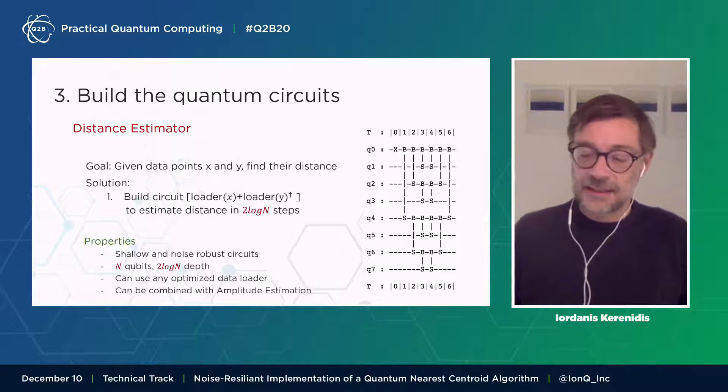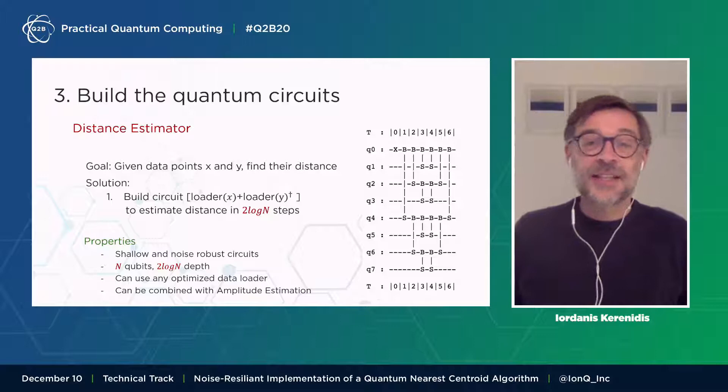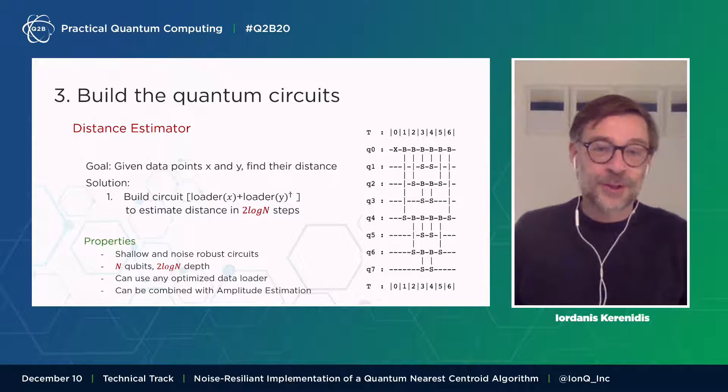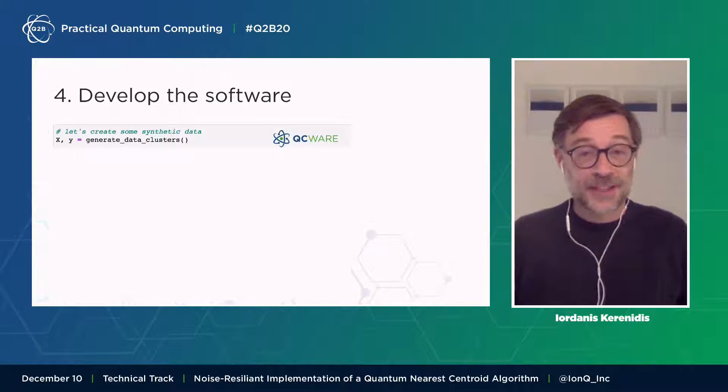Here, what we need to do is given data points x and y, we need to find their distance. And the circuits for finding the distance are pretty simple to explain now that we know how to load this classical data into quantum states. In fact, the first half of the circuit is just the loader for the first input x. And the second half of the circuit is the adjoined circuit for the loader of the second data point. What we see here is that we have created shallow and very noise-robust circuits. And we will see about this noise-robustness later on in the talk. We use the same number of qubits n and only two times log n depth. And in fact, we can also use different types of loaders instead of the parallel one that we use here. For example, our optimized data loaders to trade off between the qubits and the depth. We can combine these loaders with amplitude estimation later on when the hardware will become better in order to reduce the number of samples that we need.